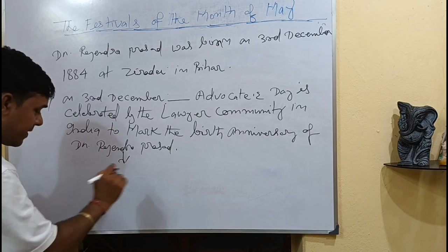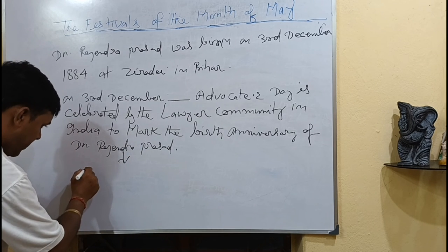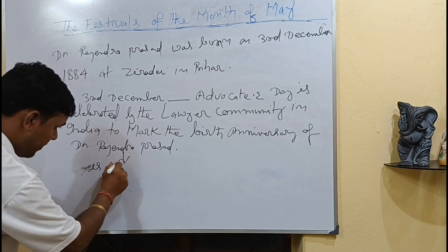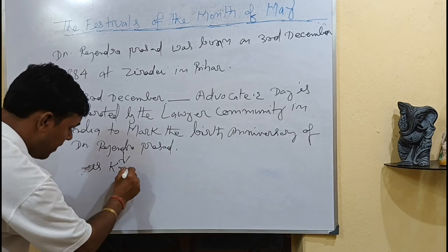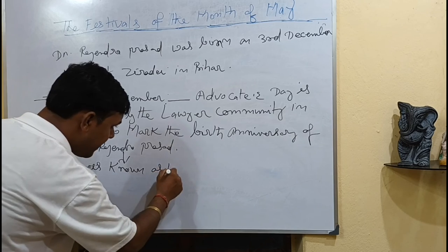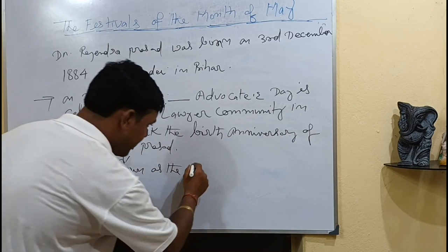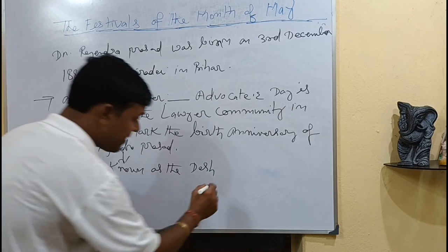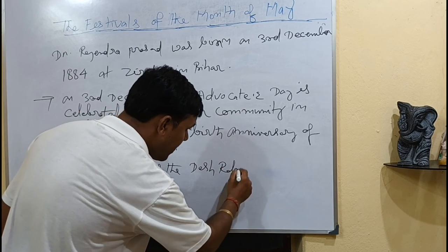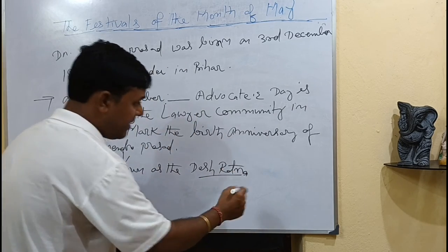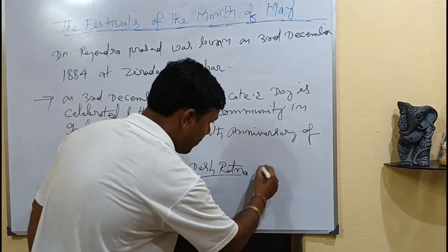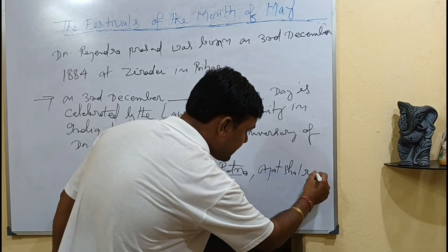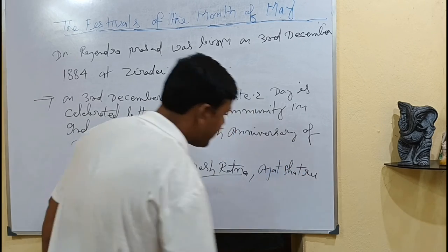Dr. Rajendra Prasad is known as 'Desaratan' and also known as 'Ajat Satru'.